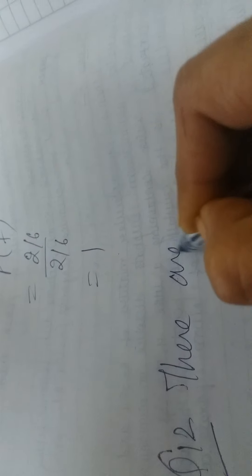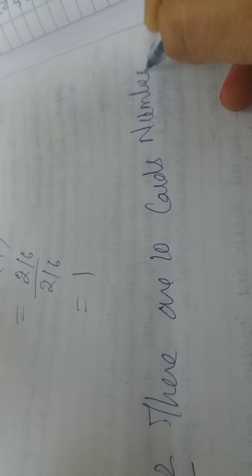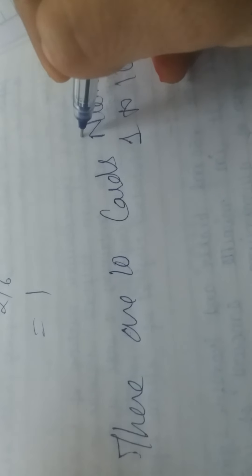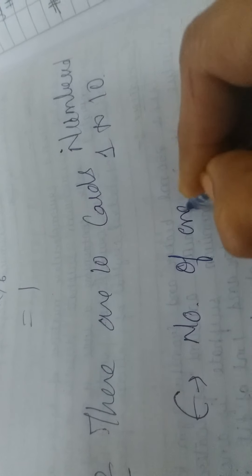What is it? 10 cards numbered 1 to 10 are placed in a box, mixed up thoroughly and 1 card is drawn randomly. There are 10 cards numbered 1 to 10. And then 1 card is drawn randomly. It is known that the number on the drawn card is more than 3. E condition, number on one card drawn is more than 3.